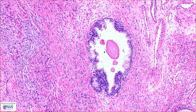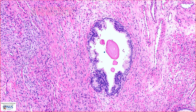Around the glands, we can see this spindle cell stroma, and this is fibromuscular stroma where we have fibroblasts and we also have smooth muscle cells with more eosinophilic pink cytoplasm.